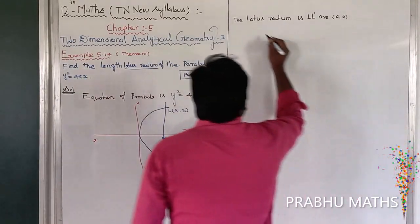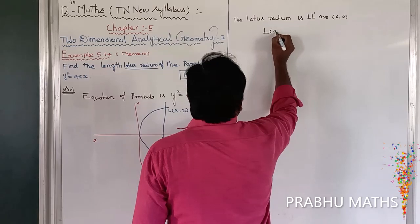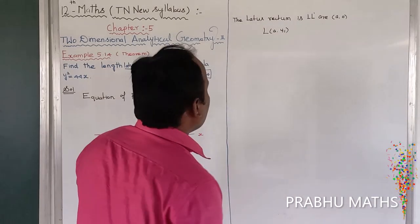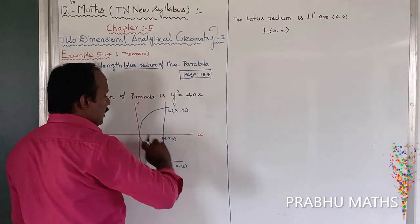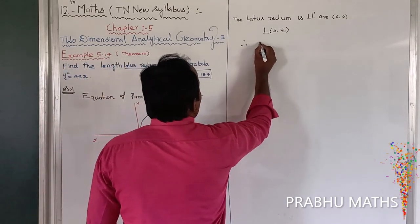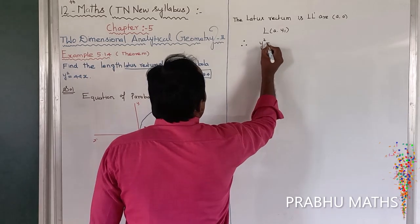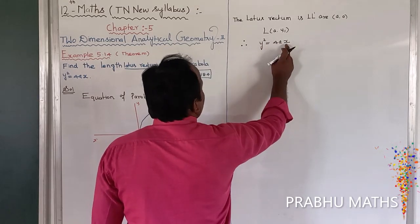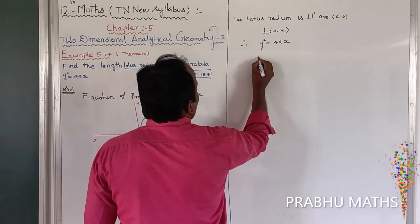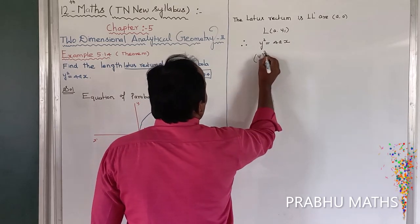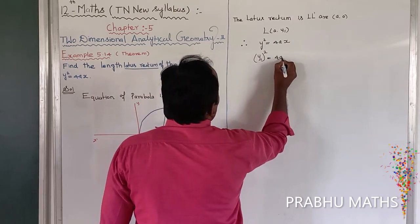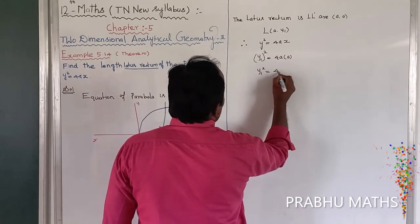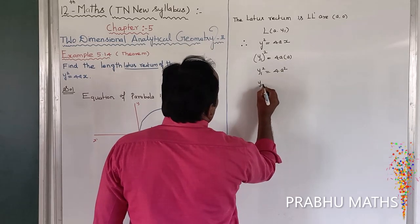The point L is (a, y1). It is passing through that line, so we substitute into the given equation y² = 4ax. Replace x with a and y with y1, giving y1² = 4a × a.